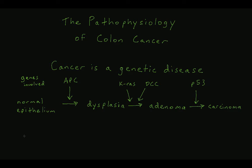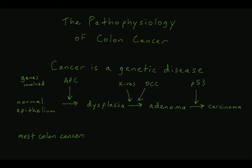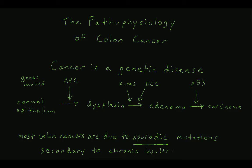For instance, a germline mutation in the APC gene, which stands for adenomatous polyposis coli, is associated with familial adenomatous polyposis, or FAP. These rare familial syndromes involve different treatment principles of diagnosis and management and will not be discussed further in this video. The vast majority of colon cancers are due to sporadic mutations in the colonic mucosa. These sporadic mutations result from chronic insults to the mucosa, which explain why things like age, smoking, and inflammatory bowel disease are risk factors for developing colon cancer. All further discussion in this video will pertain specifically to sporadic adenocarcinoma of the colon.